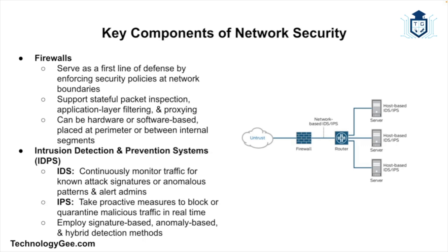Next we're going to talk about the key components of network security. Network security comprises multiple layers of defense, each addressing different aspects of network protection. The first is firewalls — firewalls act as a barrier between internal networks and external threats, and they monitor and control incoming and outgoing traffic based on predefined security rules.